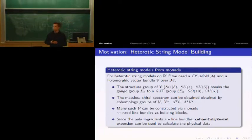We want to calculate the chiral spectrum by calculating the cohomology of certain vector bundles listed here. Many such holomorphic vector bundles can be built by monad constructions, which means you have line bundles as building blocks.